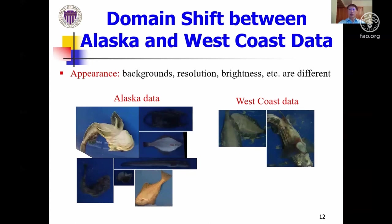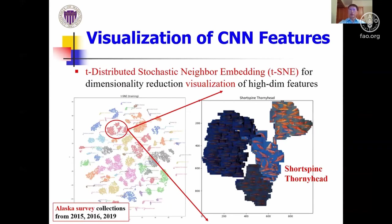In addition to the distribution difference between the two datasets among overlapping classes — the so-called label shift between source and target domain — their appearances are also quite different, which is the so-called domain shift. This appearance difference can be further visualized by comparing embedding features extracted by the trained AI-CNN model, where high-dimensional embeddings of the Alaska dataset are visualized in a T-SNE plot. Species embedding features tend to separate into clusters through metric learning, where same-class data are forced close together while different classes are pushed apart.